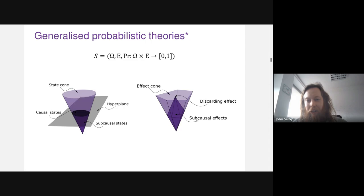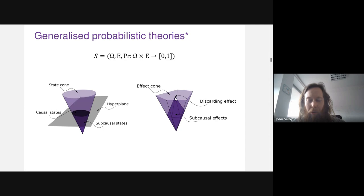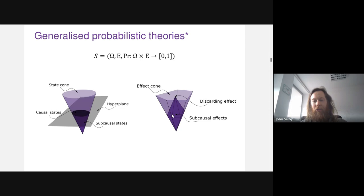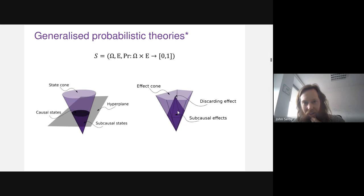On the effect side things look a little more complicated. We again have a convex cone in a real vector space, and we have a unique discarding effect — this lets us ignore systems — which lives at the top of the polytope. Sub-normalized or subcausal effects lie between the origin and this discarding effect. For reasons that will become apparent later, I'm not going to give too many details about the precise geometry of the effect space, because it turns out not to be relevant.